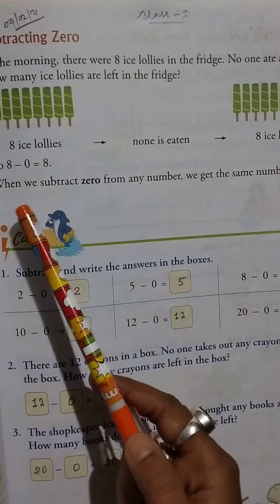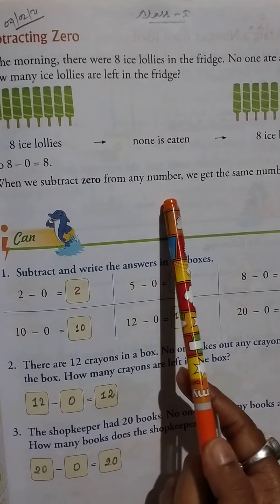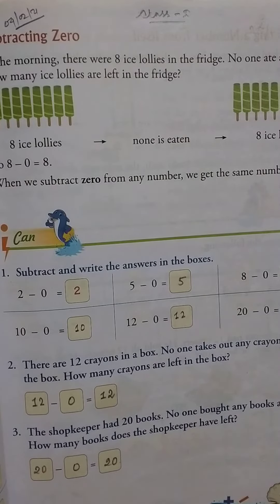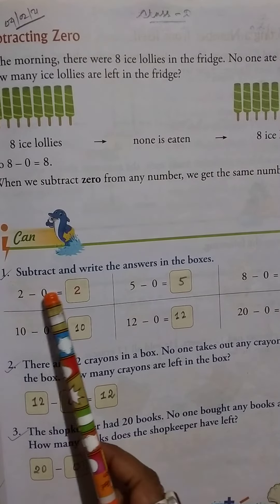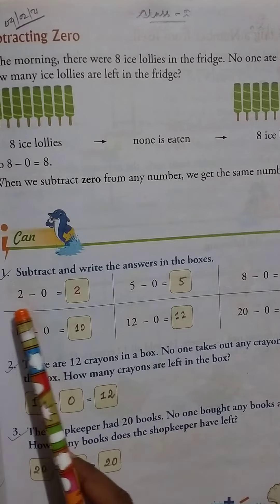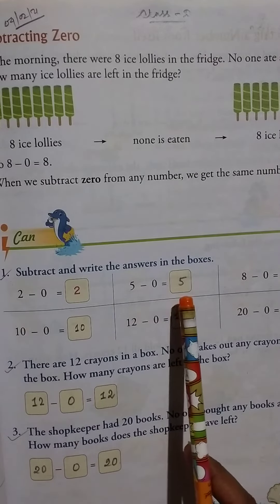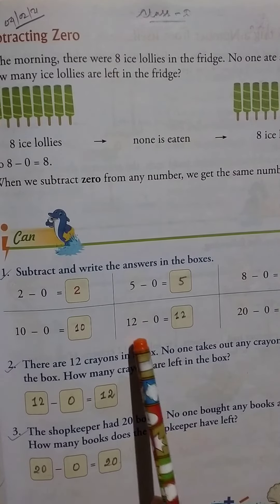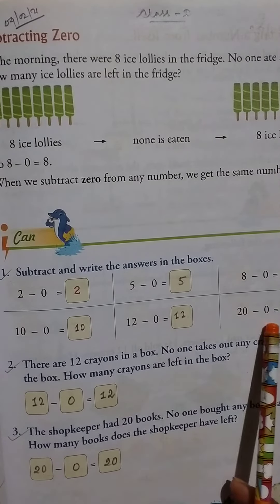When we subtract zero from any number, we get the same number. Here are examples. Subtract and write the answers in the boxes: 2 - 0 = 2, 5 - 0 = 5, 8 - 0 = 8, 10 - 0 = 10, 12 - 0 = 12, 20 - 0 = 20.